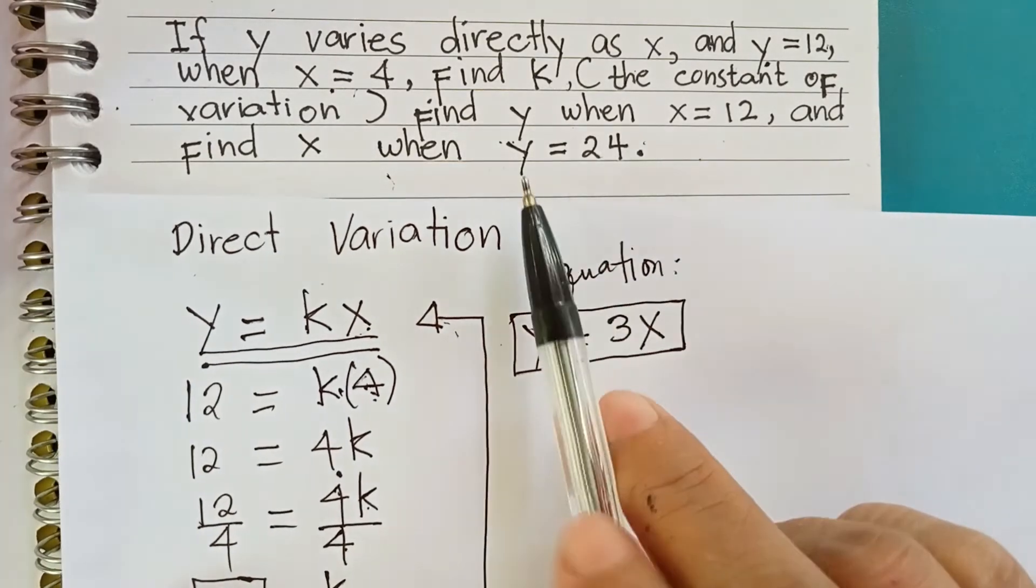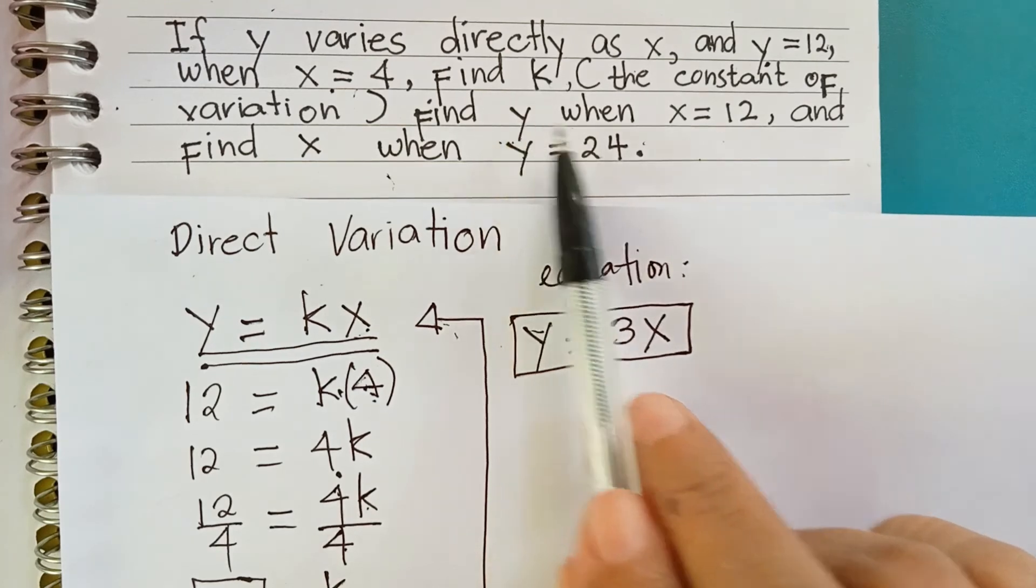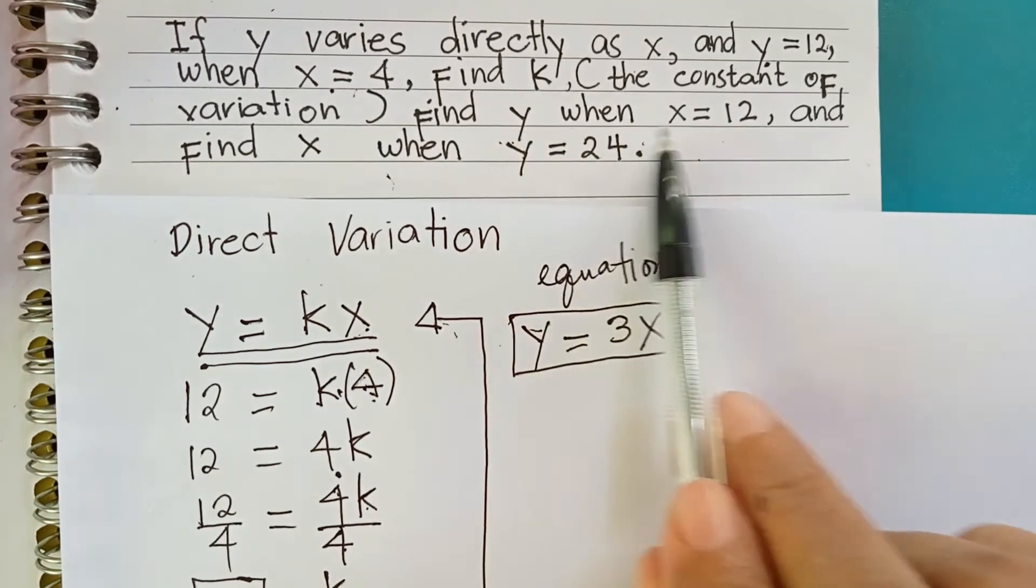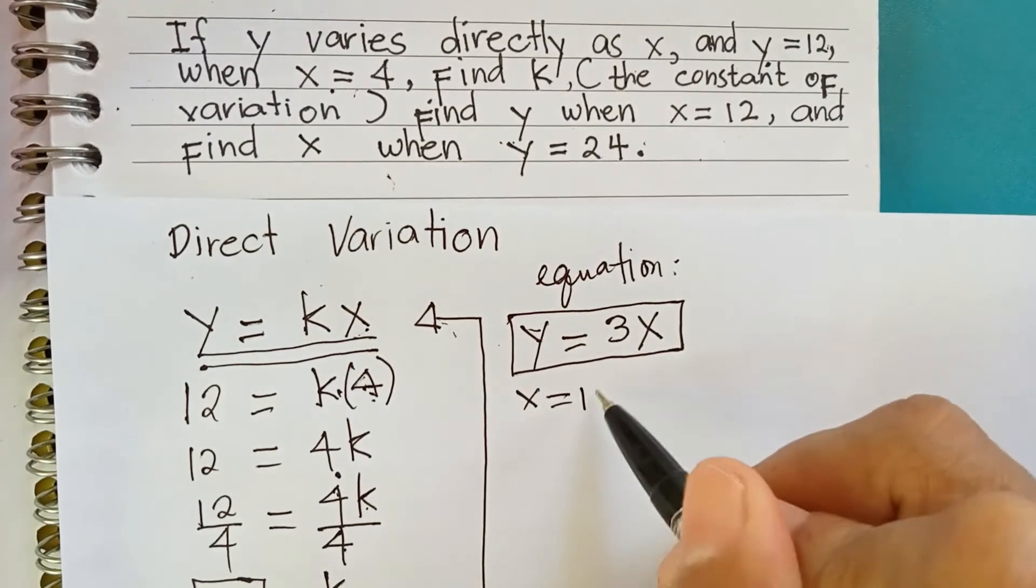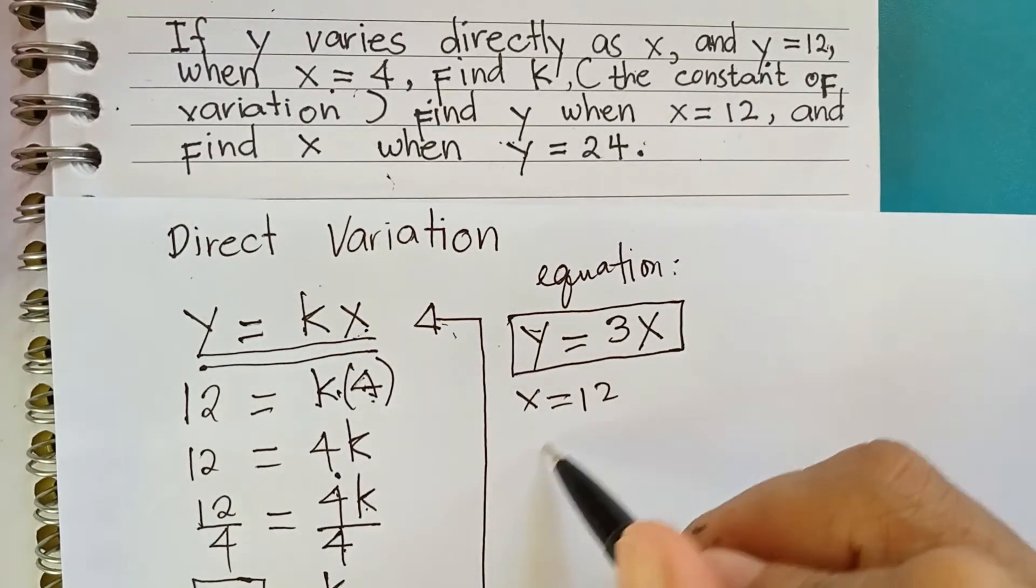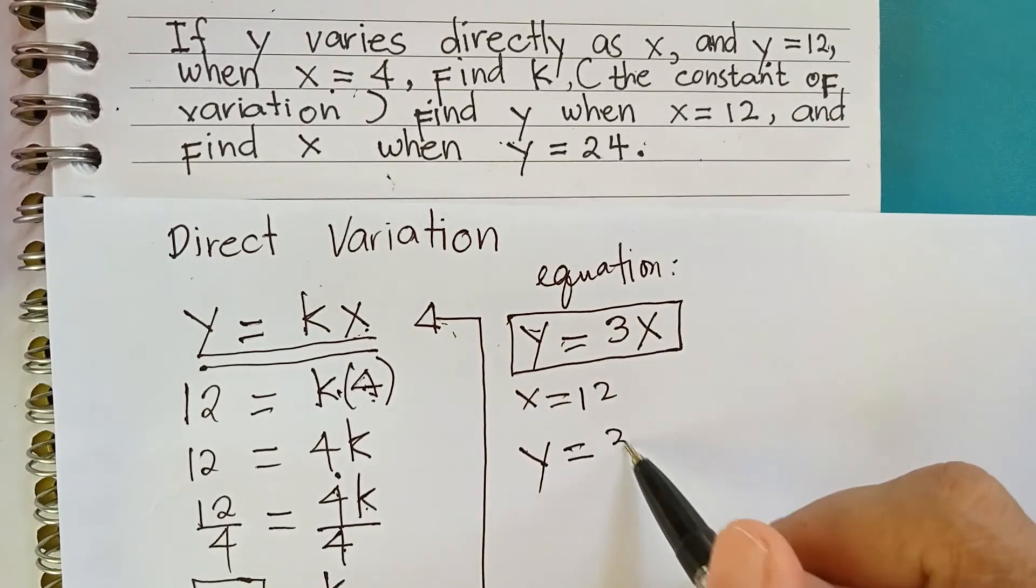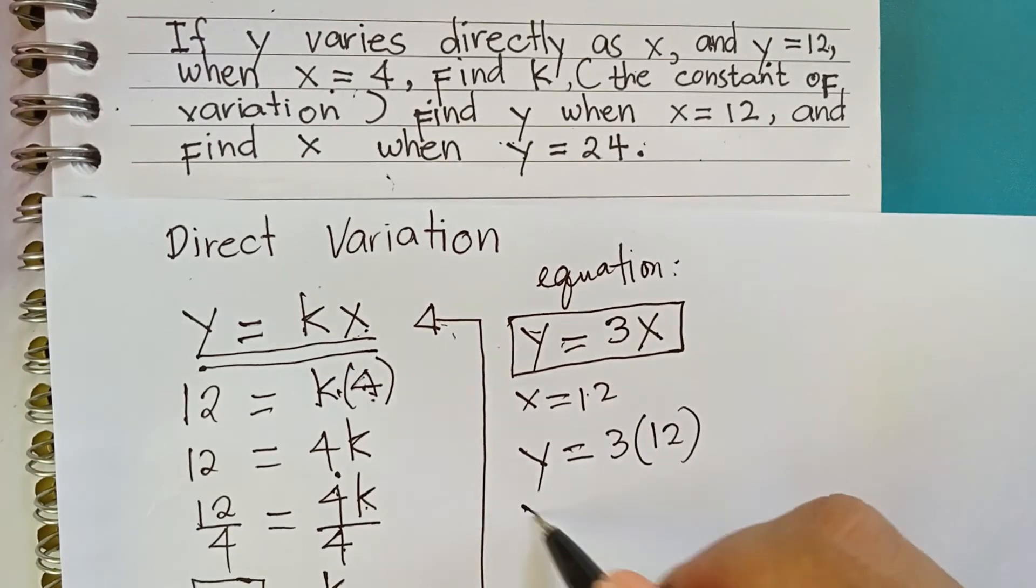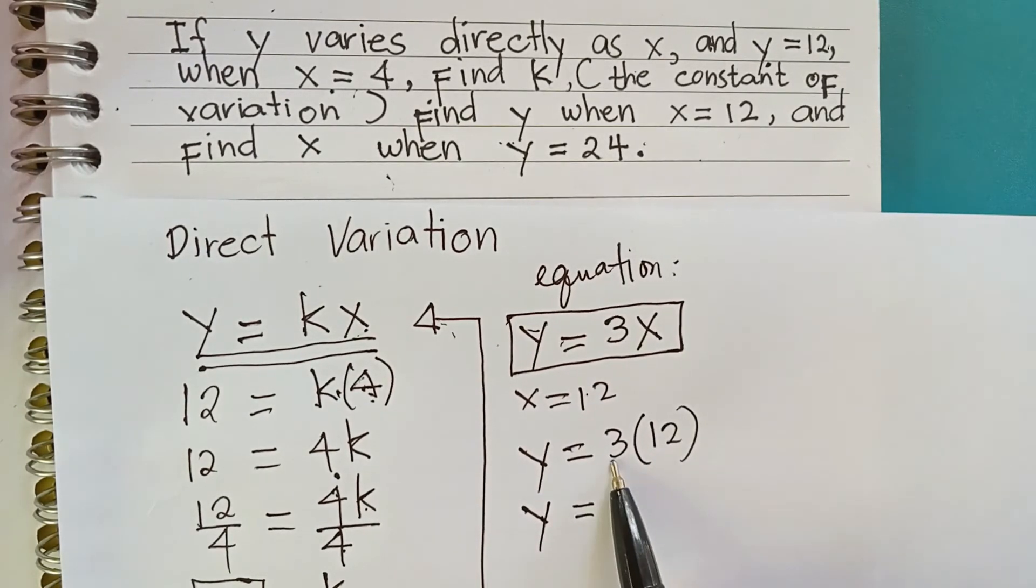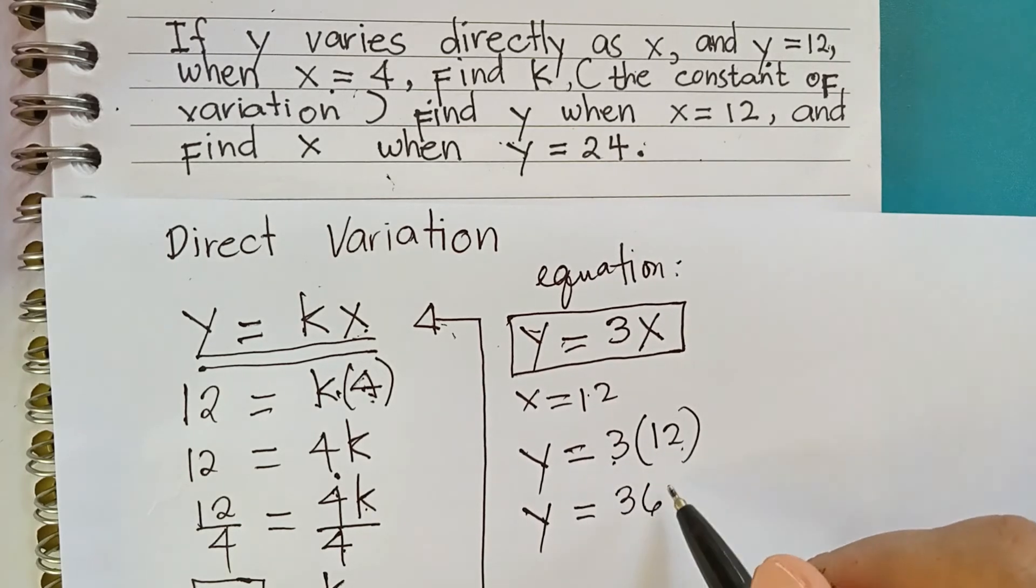So, when the second part of the problem is find y when x equals 12. So, when x equals 12, what is our y? Using the formula y is equal to 3 times x is 12. So, y equals 3 times 12. The answer is 36.